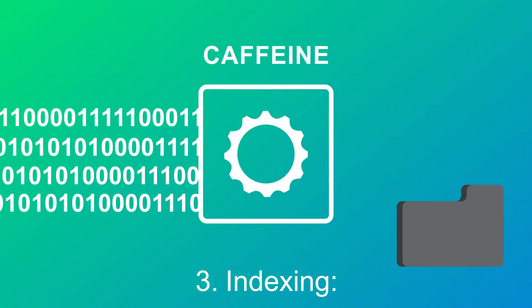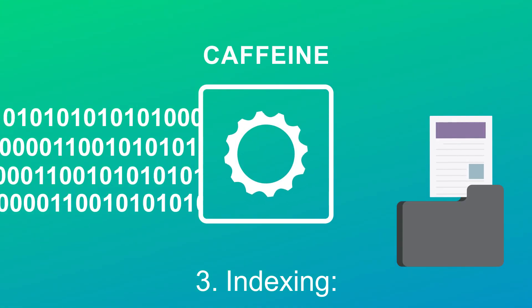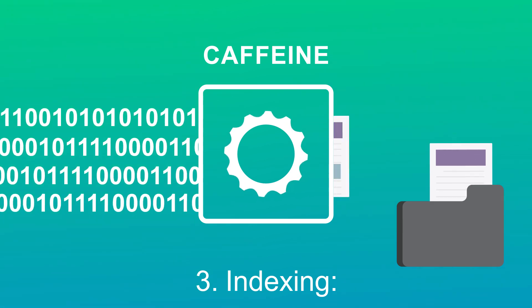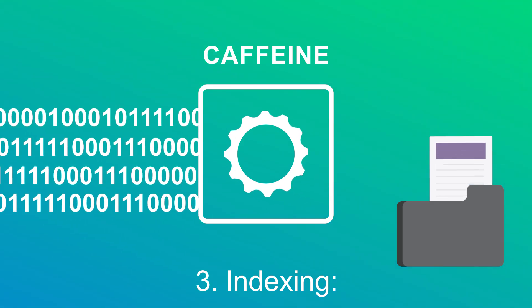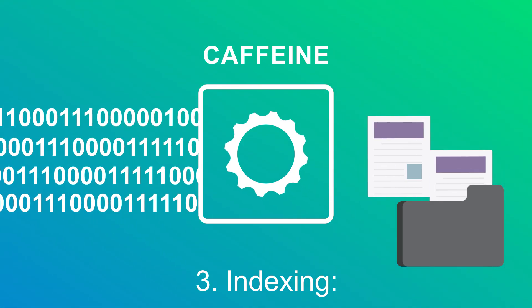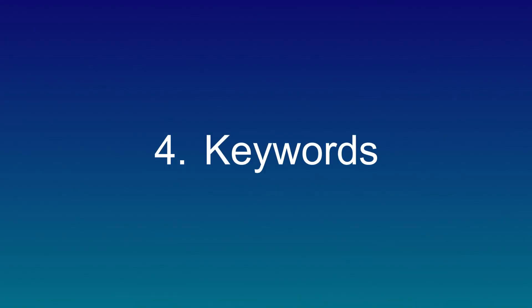Three, indexing. Once the Google bots crawl data to Caffeine, it is then processed by its servers. If your website or content is not visible in the search results, it is because your posts are not indexed.